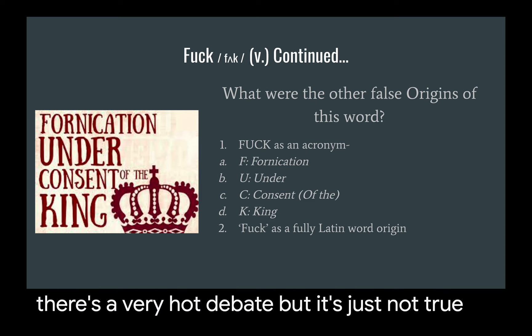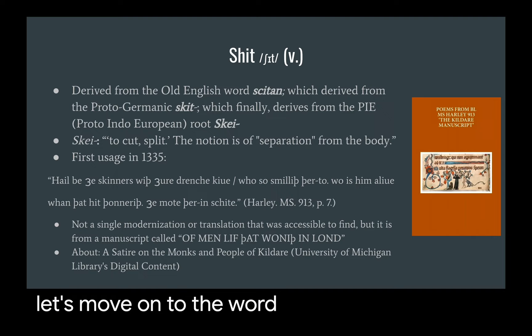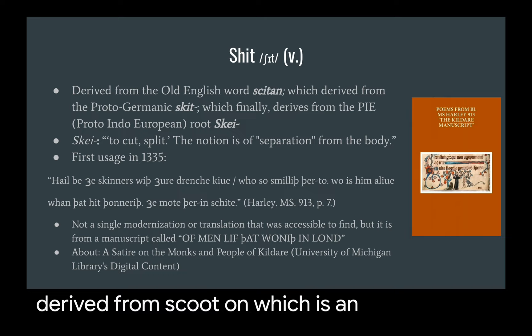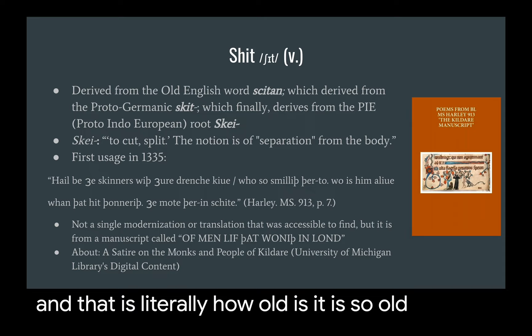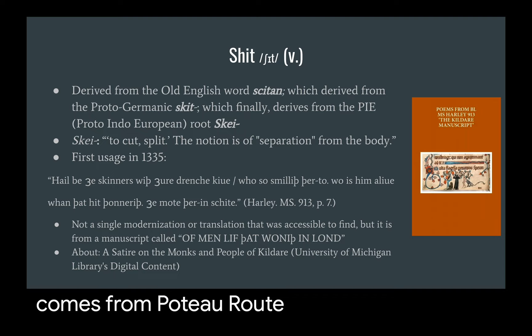Let's move on to the word 'shit.' The word shit is derived from 'skitan,' which is an Old English word, and that in turn is derived from the Proto-Germanic 'skit' root. The 'skit' root is also derived from the Proto-Indo-European root 'skay.' That is literally how old shit is — it is so old that it comes from Proto-Indo-European. The 'skay' root meant 'to cut or split,' most likely connoting separation from the body, which if you think about it makes a lot of sense.